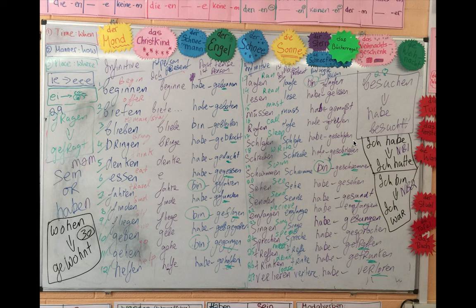Schlafen: S-C-H-L-A-F-E-N. Ich schlafe, Ich habe geschlafen, G-E-S-C-H-L-A-F-E-N. Schreiben: Ich schreibe, Ich habe geschrieben. Schwimmen: Ich schwimme, Ich bin geschwommen. Sorry, Ich bin geschwommen when you're talking about schwimmen normally.